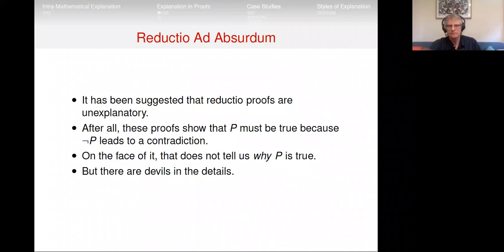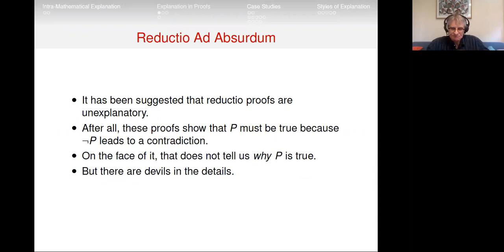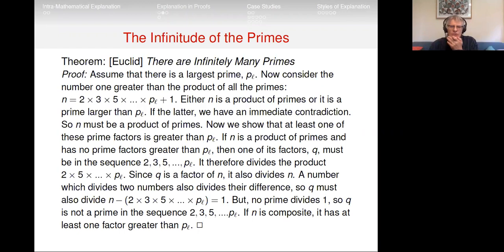Let me start with a bit of ground clearing. It's been suggested that reductio proofs are unexplanatory — after all, these proofs show that p must be true because not-p leads to contradiction. On the face of it, that doesn't tell us why p is true. It just tells us the assumption of not-p would lead to trouble — the worst kind of trouble, contradiction. But there are devils in the details here.